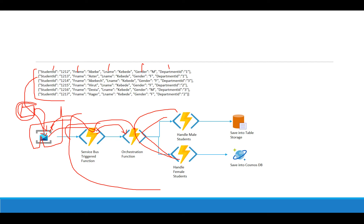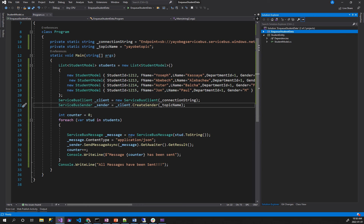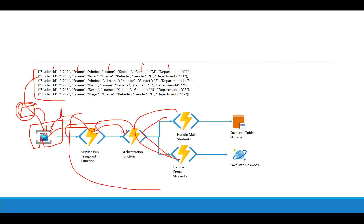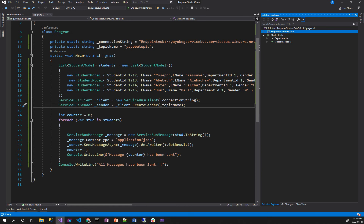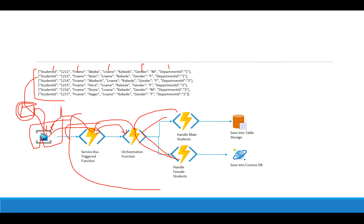Okay, we're going to create another durable function. It's very interesting to learn durable functions more and create another project because we use it in the network. Durable function is an Azure function extension. You have a starter function, a service bus trigger function, and in the orchestration there are different tasks which automatically create from a template. That's how beautiful the durable function is.